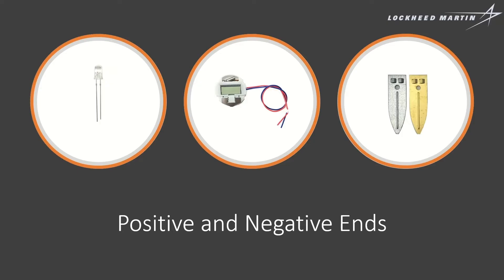One last thing before we start — don't forget that positive and negative ends are important. On our LED light, the slightly longer leg is positive, and the shorter leg is negative. For our clock, the red wire is positive, and that's pretty standard, so we'll make sure that the red wire we connect to is also positive — always connect red to red. Our copper connector is positive, while our zinc connector is negative, so keep that in mind as we dive right into our experiment.